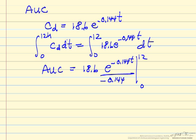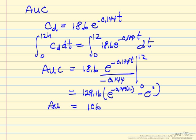So the integral is the constant times the exponent divided by this k value here. And so we can substitute in the limits. This ratio is 129.16, and we now have e to the minus 0.1444 times 12 minus e to the zero. And if we do the calculation, this comes out to 106. So the area under the curve is 106, and this is milligrams hours per liter.